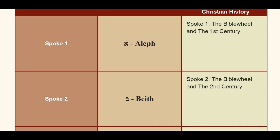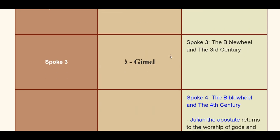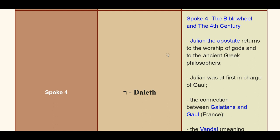I didn't do any research on the first three spokes, but the first spoke — the first century — ranges from the birth of Christ to John on the island of Patmos. The 2nd century has to do with division and Christian persecutions. But it gets interesting in the 4th century.